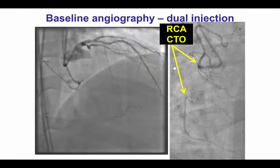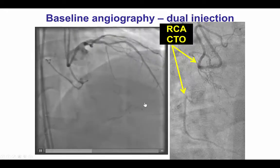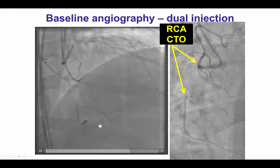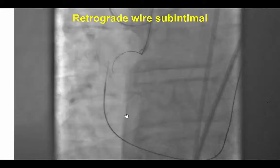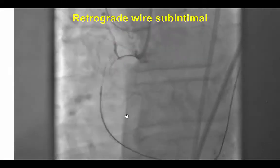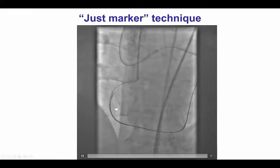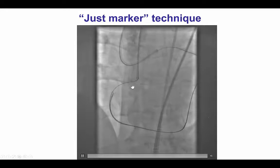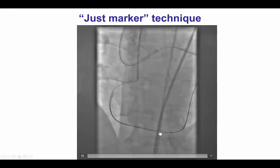After doing that, we were able to re-engage the vessel with a dual injection that demonstrated a nice septal collateral from the LAD to the right posterior descending artery. We were able to easily cross this collateral using a Fielder FC wire and a Corsair microcatheter, advancing it to the mid-right coronary artery. However, the wire then took a subintimal course, but having the retrograde wire in place helped us understand the course of the vessel, and using it as a target, we were able to advance an antegrade wire into the distal true lumen next to the retrograde Corsair catheter.